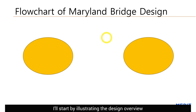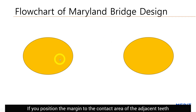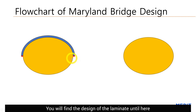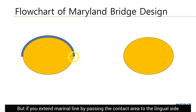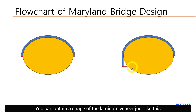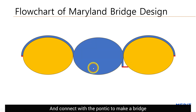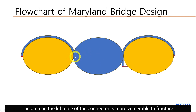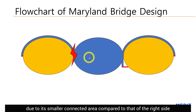I will start by illustrating the design overview. If you position the margin to the contact area of the adjacent piece, you will find the design of the laminate until here. But if you extend the marginal line by passing the contact area to the lingual side, you can obtain a shape of the laminate just like this, and connect with the pontic to make a bridge. The area on the left side of the connector is more vulnerable to fracture due to its smaller connected area compared to that on the right side.